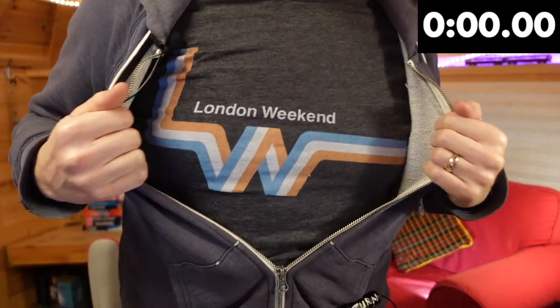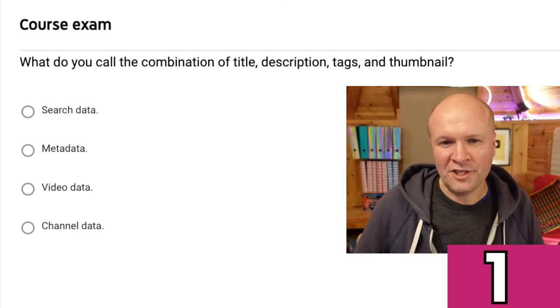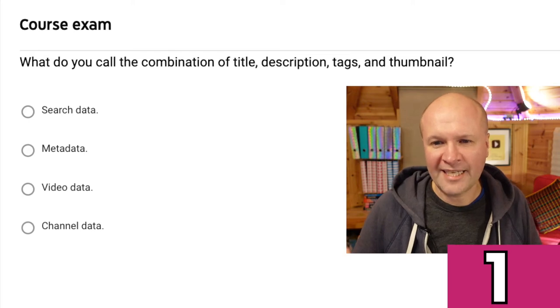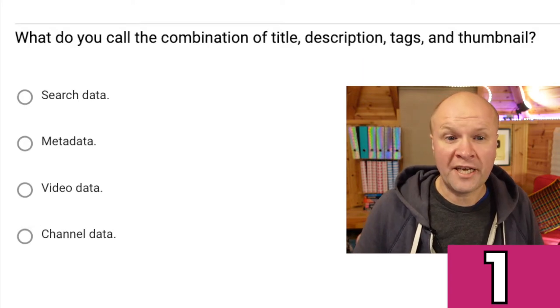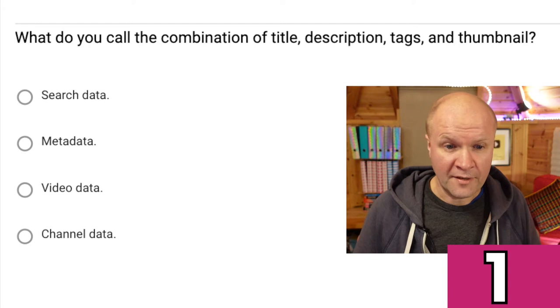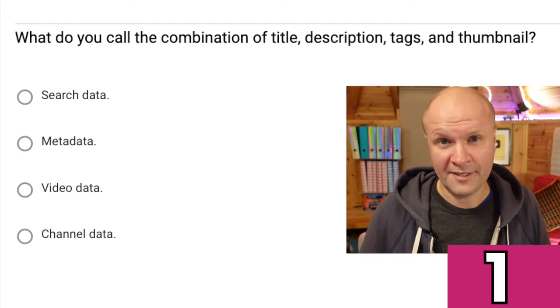The clock has hit zero. I'm in the game show mood — I've got my London Weekend t-shirt on. Question one: what do you call the combination of title, description, tags, and thumbnail? Search data, metadata, video data, or channel data?